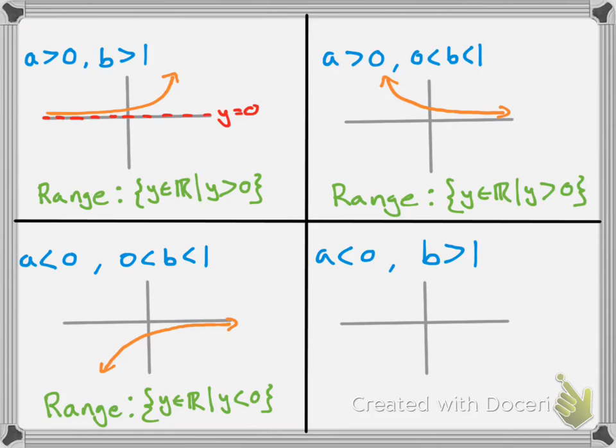In the last case — a less than 0 and b greater than 1 — we have a graph that also approaches the asymptote from below. The range is again y as an element of the real numbers such that y is less than 0.